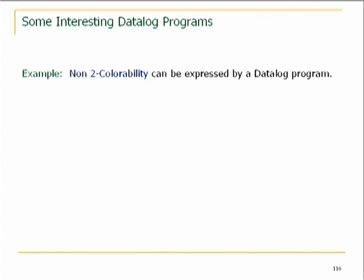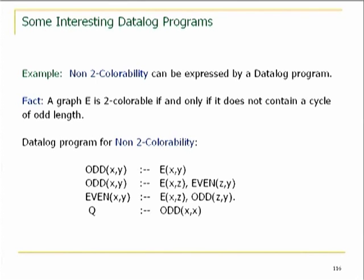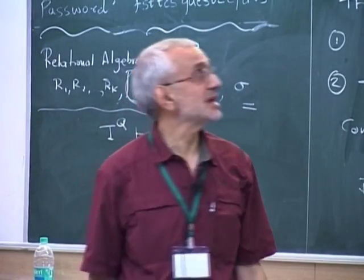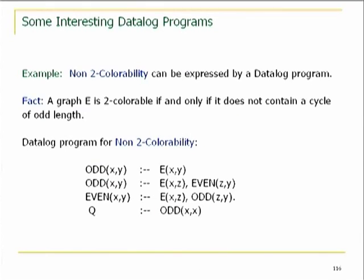Let me show two interesting Datalog programs beyond transitive closure. Non-two-colorability can be expressed by a Datalog program. Non-two-colorability is the same as saying there is a cycle of odd length. So we take the previous program for computing odd and even path lengths, and add another predicate Q — a zero-ary predicate that is true if and only if there is an X such that there is a cycle of odd length from X to X. So non-two-colorability is expressible in Datalog.